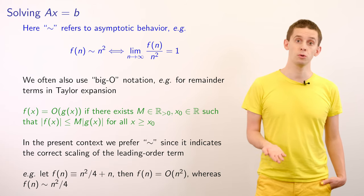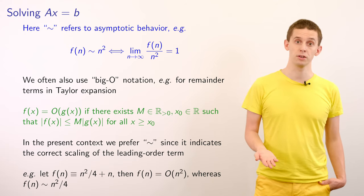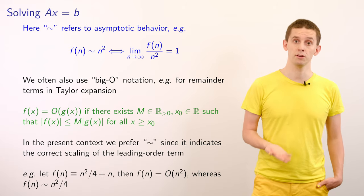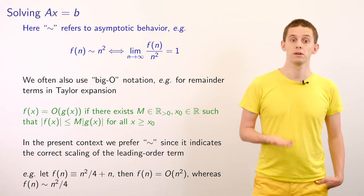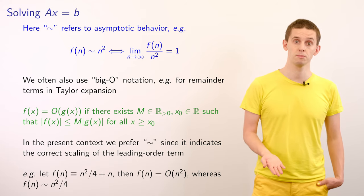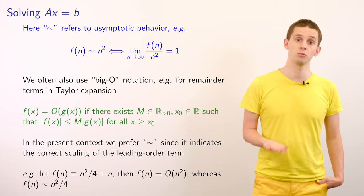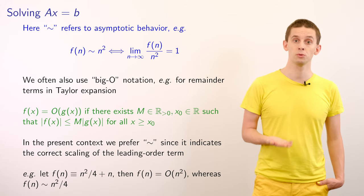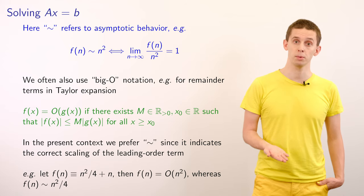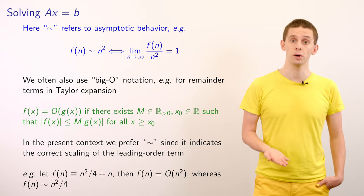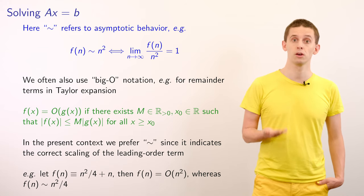It's worth comparing the tilde notation to big-O notation used for Taylor series expansions. We say f(x) is O(g(x)) if there exists a positive M and a value x_0 such that for all x ≥ x_0, |f(x)| ≤ M|g(x)|. We now have two ways to talk about asymptotic behavior, but we prefer the tilde form because it also tells us the scaling of the leading order term. For example, if f(n) = n²/4 + n, we'd say f(n) is O(n²), but we'd write f(n) ~ n²/4, preserving that quarter scaling of the n² term.